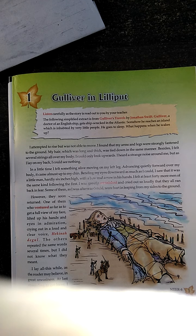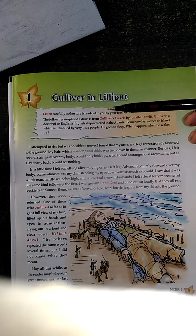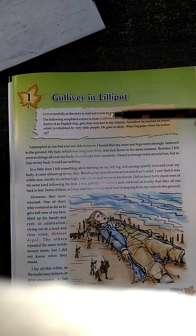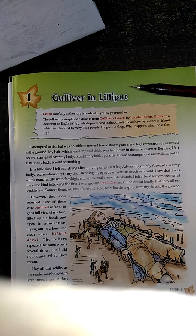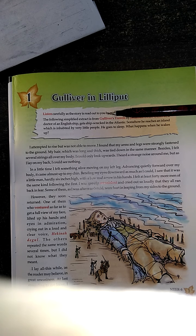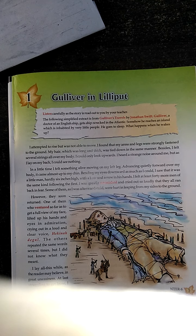Gulliver was a doctor on an English ship. His ship got wrecked in the Antarctic. Somehow he reached an island which is inhabited by very little people — the residents of that island were very small people. यह जो island था वहाँ के जो निवाशी थे वो बहुत छोटे छोटे लोग थे।